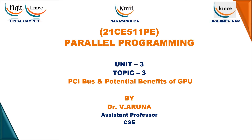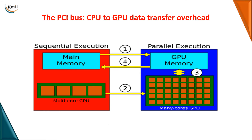Today in parallel programming we will be moving on to the next topic which is PCI bus and the potential benefits of using the GPU. The PCI plays a major important role in transferring data from CPU to GPU. PCI bus is a peripheral component interconnect which connects both your CPU and GPU. CPU is used for sequential execution and GPU is used for parallel execution.